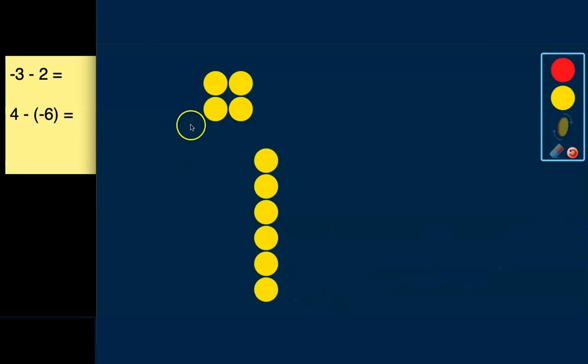And what we're left with is 1, 2, 3, 4, 5, 6, 7, 8, 9, 10 positive. So our answer, we have 4 minus negative 6 equals 10.